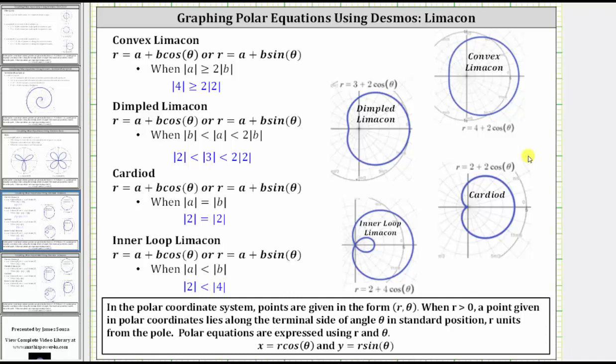In this lesson, we will use Desmos.com to explore the polar equations of a limaçon. There are four possible limaçons: a convex limaçon, dimpled limaçon, cardioid, as well as an inner loop limaçon. All the equations are in the form r equals a plus b cosine theta, or r equals a plus b sine theta.